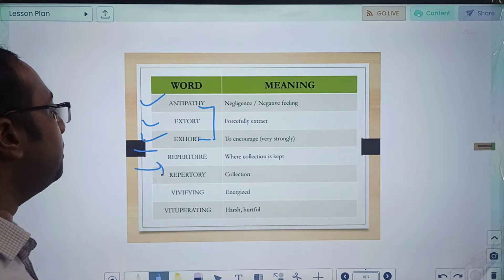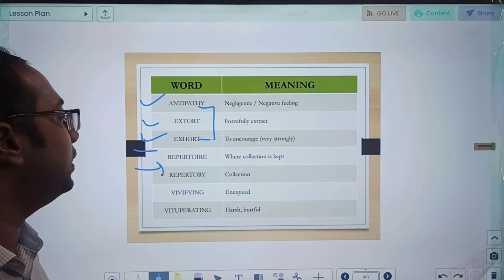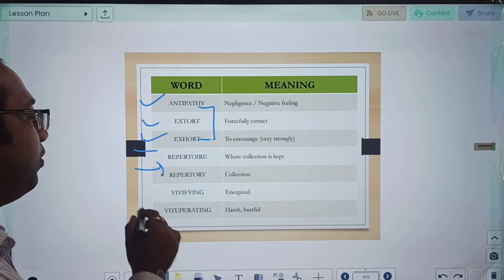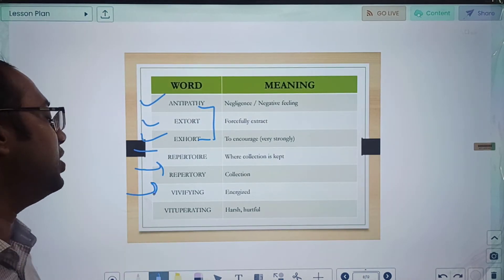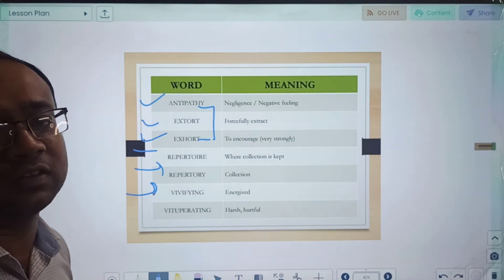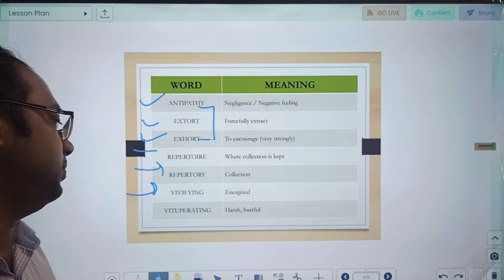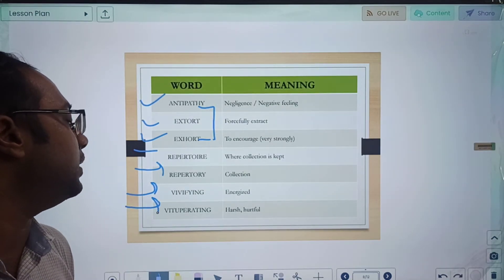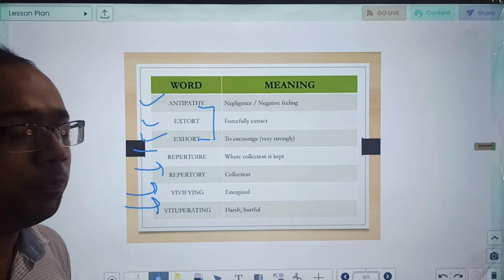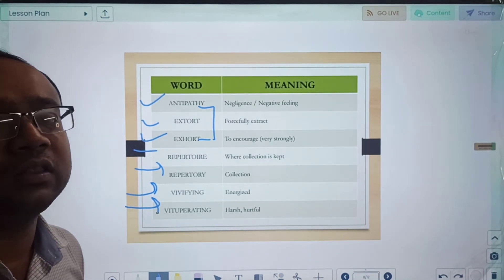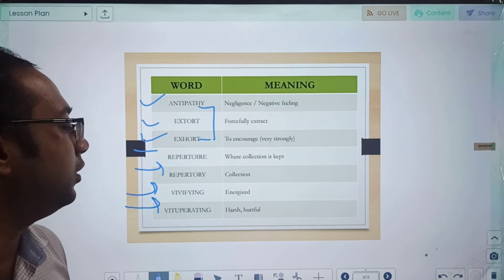Repertory, another word meaning collection. Vivifying means energized. When we say this thing vivified me, that means it energized me. Vituperating means something which is harsh or harmful. This was our third set of seven words.